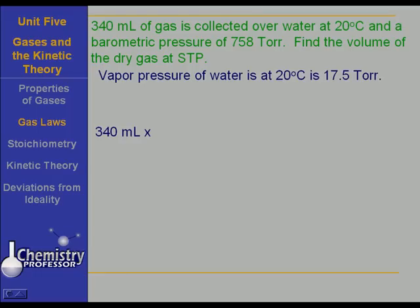It's less than 758 torr, and we know this because we had to allow for the vapor pressure of water. And when we subtract that 17.5 torr from 758 torr, we're going to come out with something less than 758 torr.